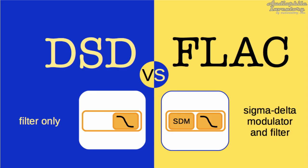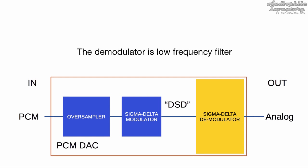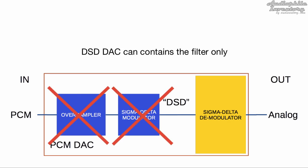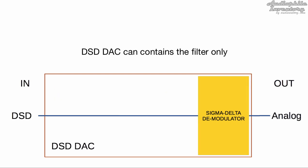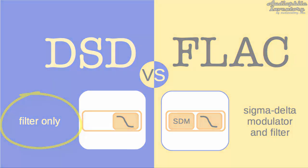Digital-to-analog converter and network: as a rule, a PCM DAC intended for FLAC playback includes a Sigma Delta modulator and demodulator. The demodulator is a low-frequency filter. An SD DAC can contain the filter only, making the SD DAC simpler than a PCM one. Read more about that in the comparison linked in this video description.